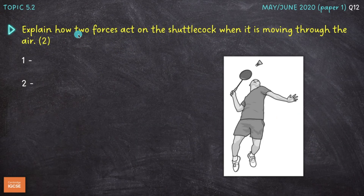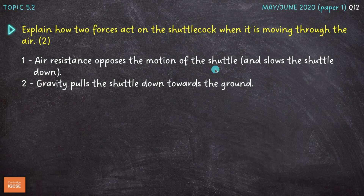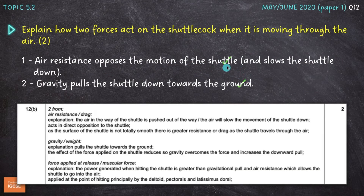The next part asks us to explain how two forces act on the shuttlecock when it's moving through the air, for two marks. Unlike the previous question which only asked us to state forces, this one asks us to explain how they act — a slightly more difficult question requiring more detail. I've gone for air resistance, and I've said that this opposes the motion of the shuttle, acting in the opposite direction to that in which the shuttle is moving. That explanation is already good enough for a mark.